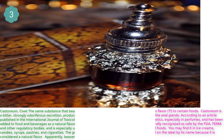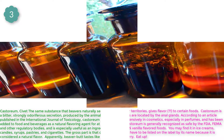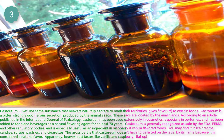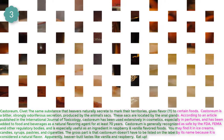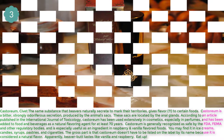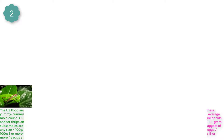Number 3: Castoreum. The same substance that beavers naturally secrete to mark their territories gives flavor to certain foods. Castoreum is a bitter, strongly odoriferous secretion produced by the animal's scent sacs, which are located near the animal.